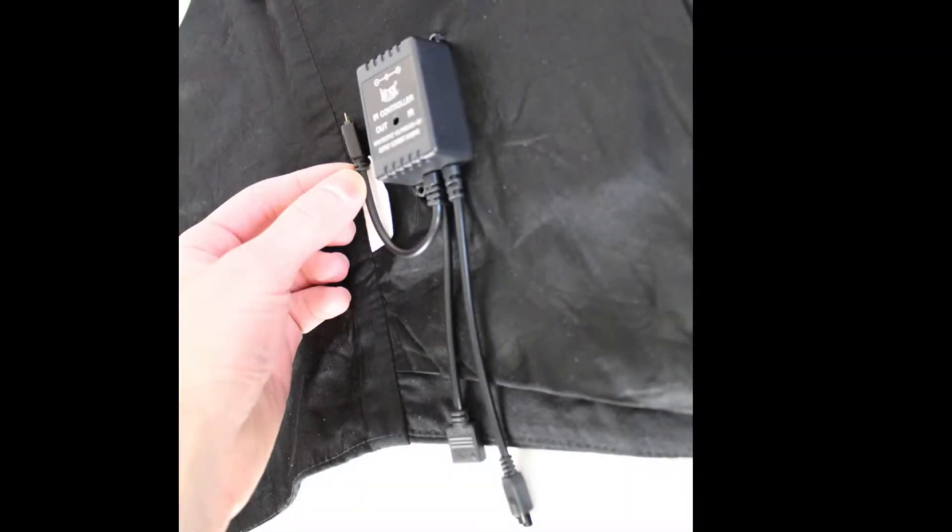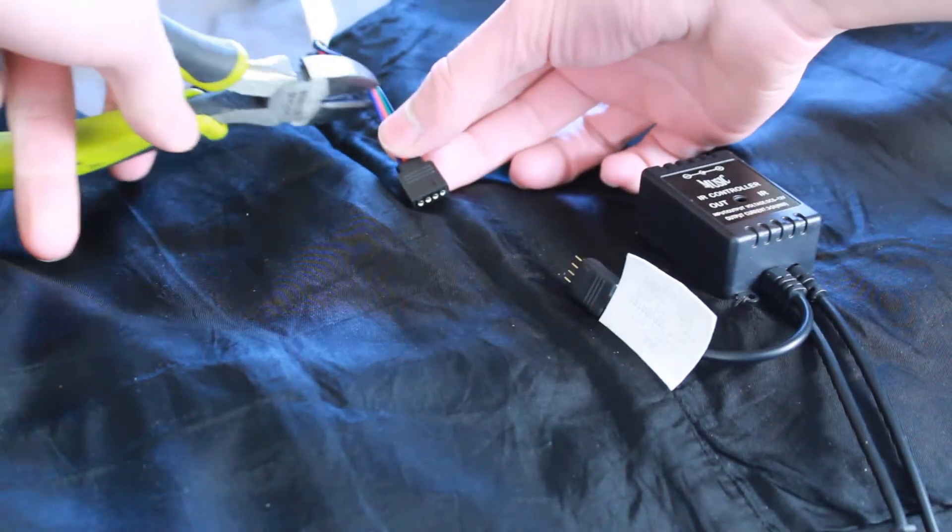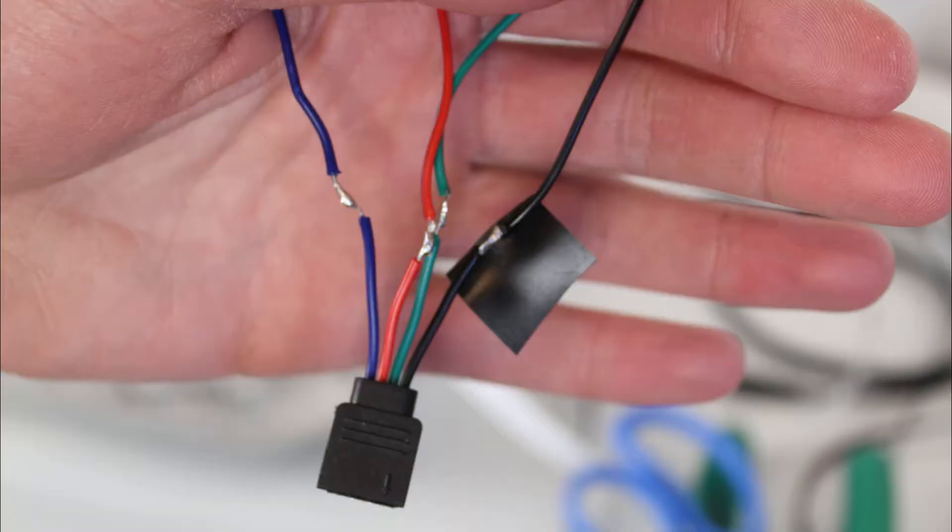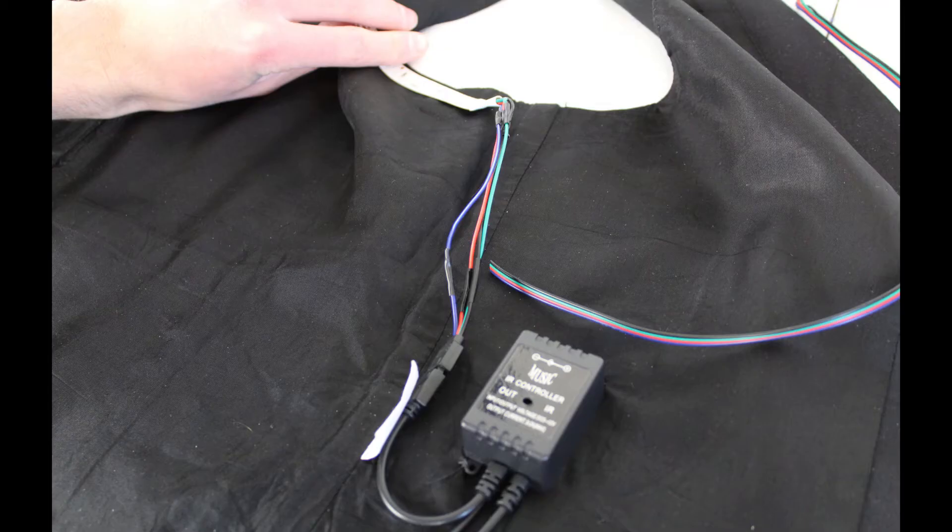I mounted the controller inside the vest under the right arm with the sensor and one connector hanging out the bottom, while the other one turns around to connect to the LED strip. The beginning of the LED strip was not long enough to reach the controller, so I cut off the connector, and with a little bit of soldering, extended the length to reach the controller.